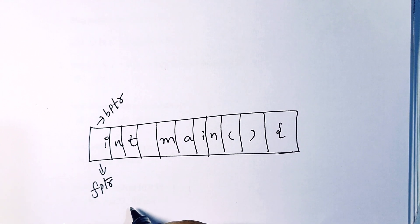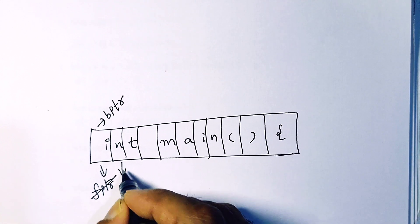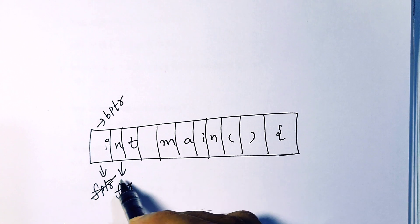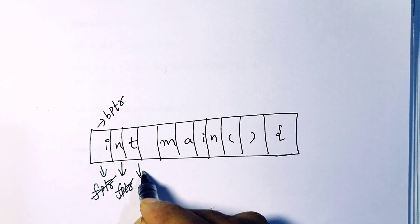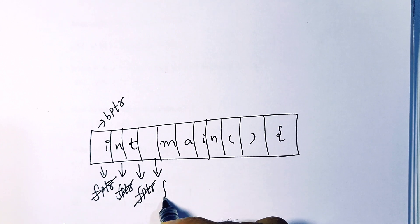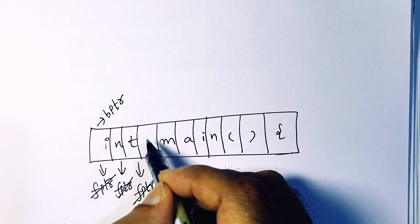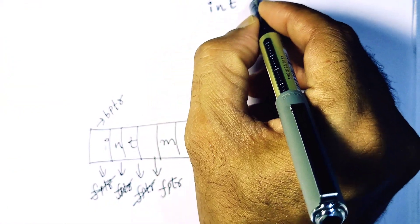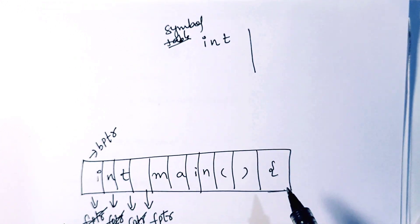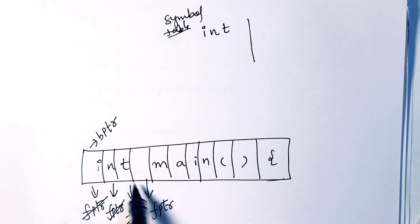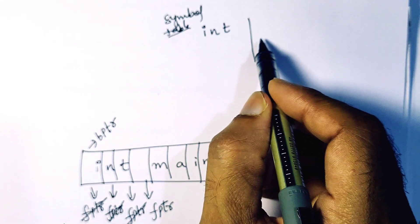Over time, the value of the forward pointer will be incremented. Initially the value of bptr and fptr is 'i'. It is incremented to the next position, then again incremented, so fptr value becomes 't'. When it finds a space, this 'int' is identified as a lexeme — you can also call it a keyword — and it is going to be stored in the symbol table.